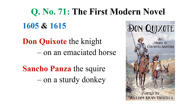Don Quixote was published in 1605, with a second volume in 1615, by the Spanish writer Miguel de Cervantes. It is considered the first modern novel in the world. We have a pair of well-known characters: Don Quixote, the knight — an old man who reads a lot and wants to go on an adventure — riding an emaciated horse named Rosinante, along with his neighbor Sancho Panza, a farmer who acts as his squire and travels on a donkey named Dapple. This is considered a realistic portrayal of the world.